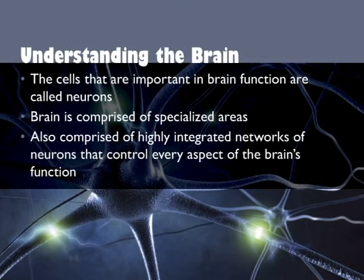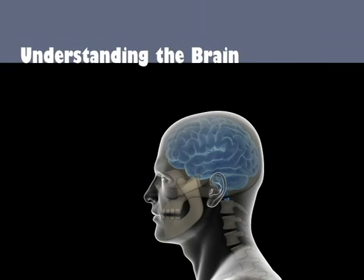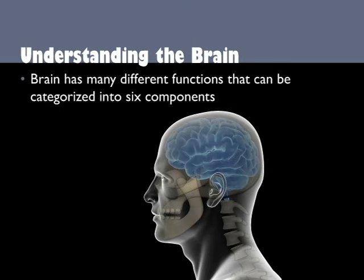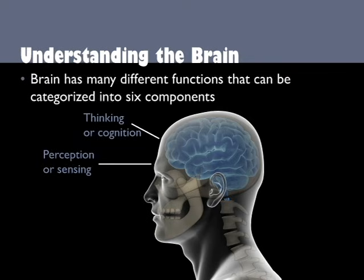Neurons communicate using both electrical signals and chemical messages. The brain has many different functions, but they can be categorized into six components. The first is thinking or cognition. The second is perception or sensing — in other words, how the brain sees the world. The third function of the brain is emotions. Emotions are the ability to experience feelings and express those feelings to others.